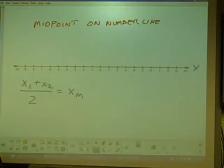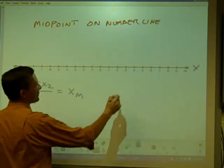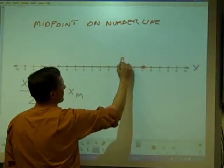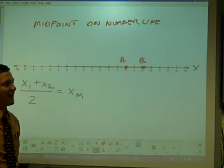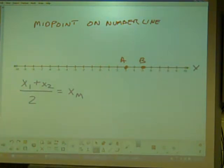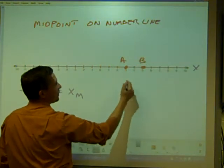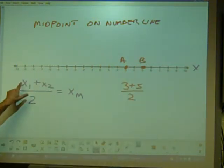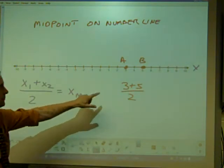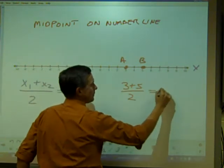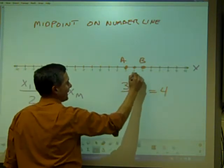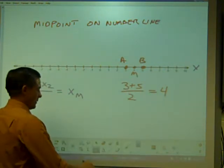My favorite example to start with on a number line is, what's the midpoint between three and five? Visually, I hope you guys can see the midpoint is four - one each way. But again, the formula really helps spell it out: three plus five over two, eight over two is four. So that's my midpoint M.